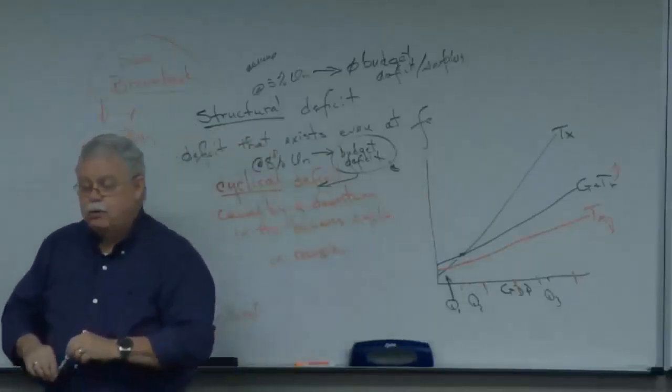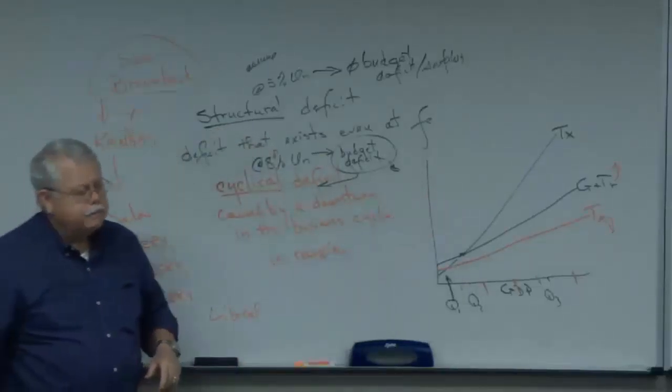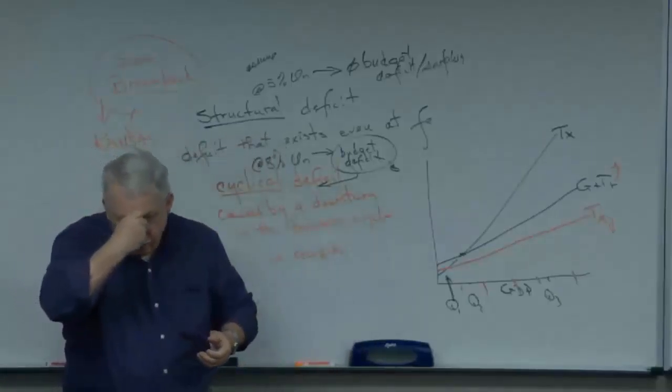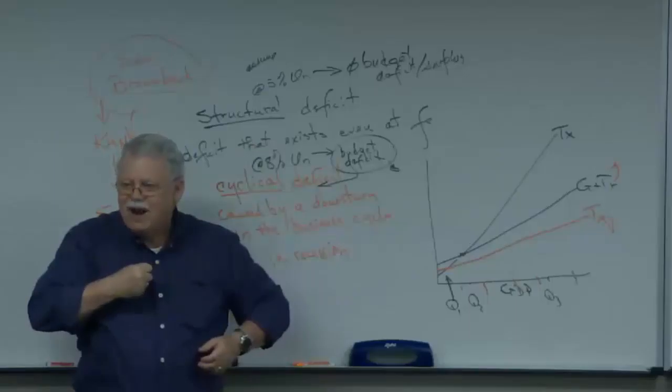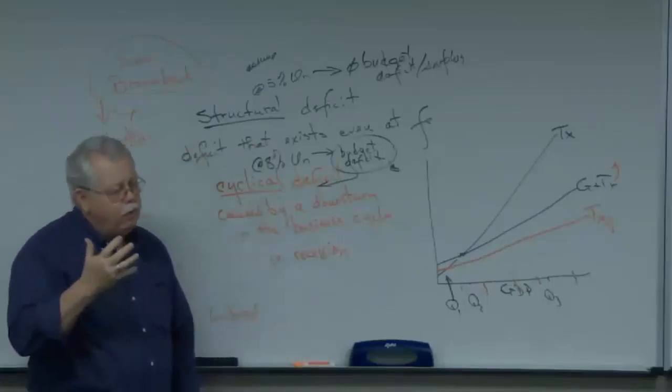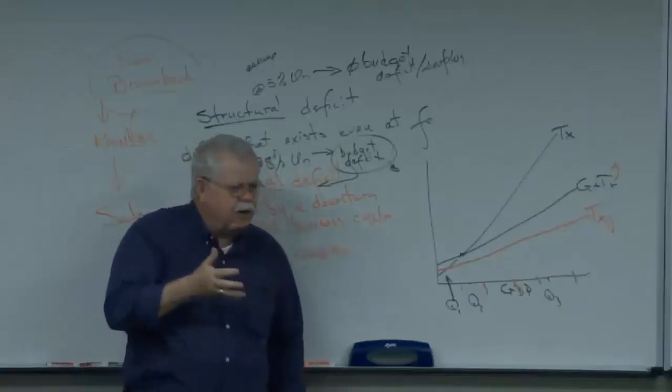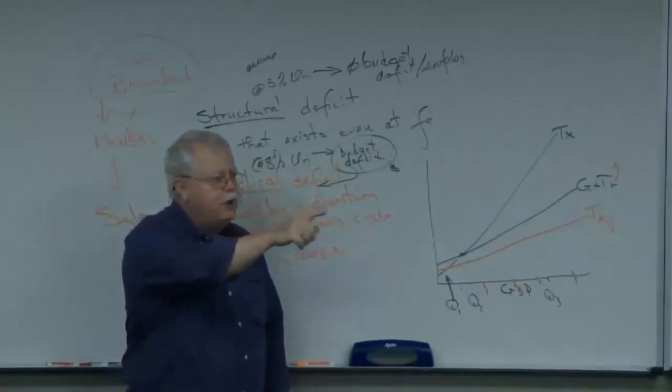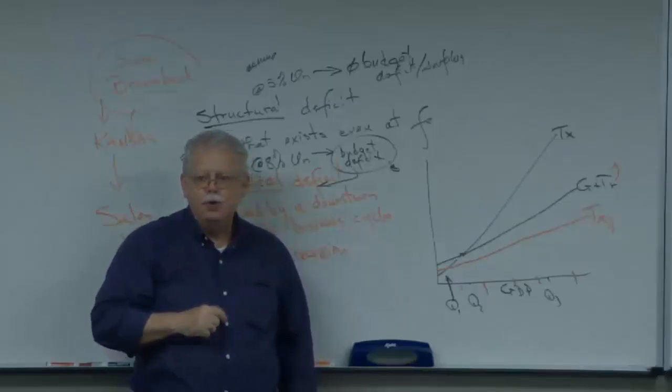The classical view was a little different. So much of the classical view is based on a very personal microeconomics point of view. What do you suppose people in the 1800s and early 1900s thought about individuals who spent more money than they make? Who went into debt?